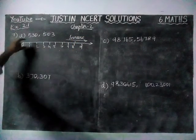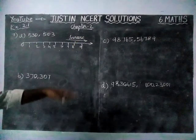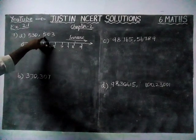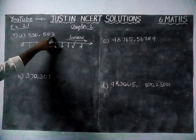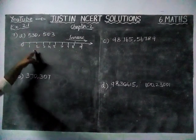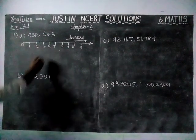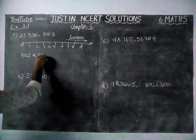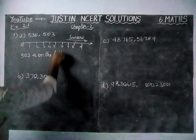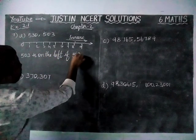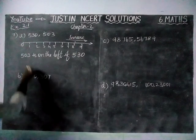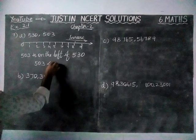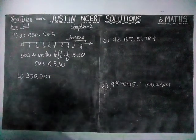Here the first number is 530 and this number is 503. So 503 will come on the left hand side of 530. So 503 is on the left of 530, and by the sign: 503 is less than 530.